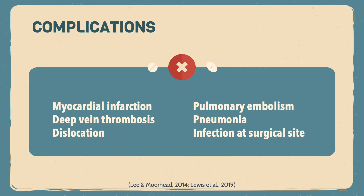A variety of complications can occur after surgery. Eighty to ninety percent of myocardial infarctions occur as a result of thrombus formation which occludes blood flow to the heart. Deep vein thrombosis, or DVT, may occur in leg veins due to immobility, position of the body, or pressure; DVTs place a client at greater risk for pulmonary embolism. Dislocation is described as the displacement of the bone from its normal joint.